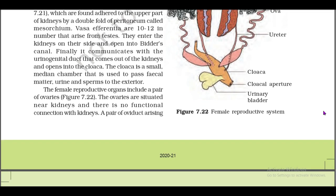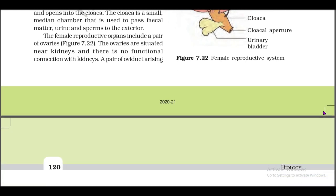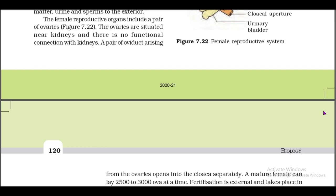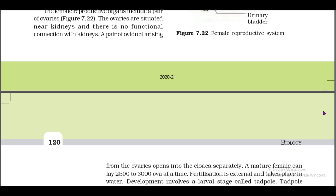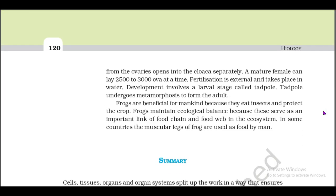The female reproductive organs include a pair of ovaries (figure 7.22). The ovaries are situated near the kidneys and there is no functional connection with kidneys. A pair of oviducts arising from the ovaries opens into the cloaca separately. A mature female can lay 2,500 to 3,000 ova at a time. Fertilization is external and takes place in water. Development involves a larval stage called the tadpole. The tadpole undergoes metamorphosis to form the adult.